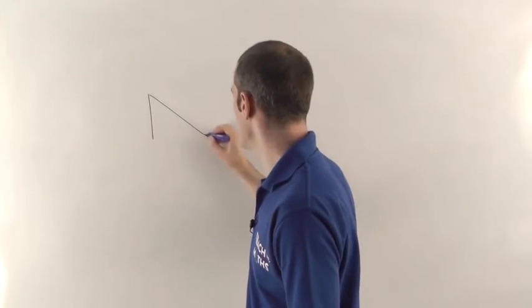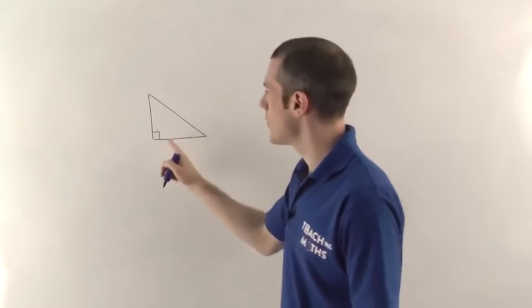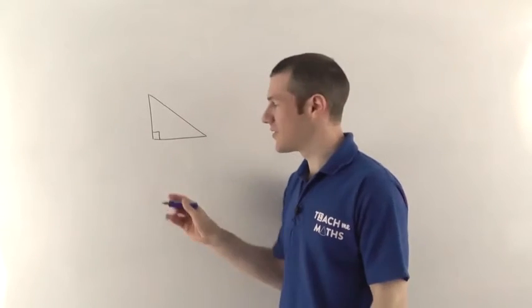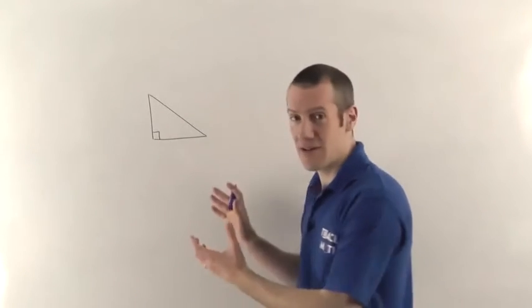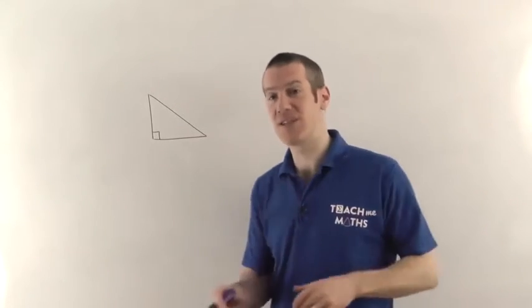So if I draw one for you here, so there's our right angle. So this has to have a 90 degree angle in or it's not a right angle triangle and Pythagoras' theorem only works for right angle triangles. It's the first thing you need to be aware of.